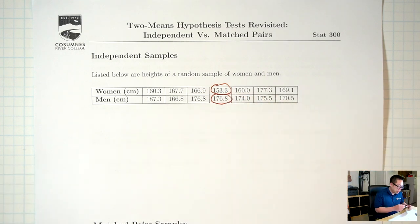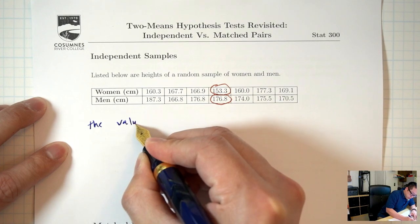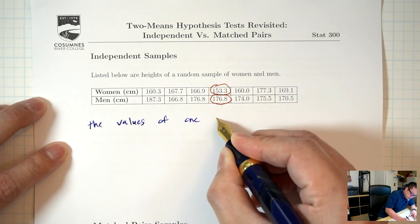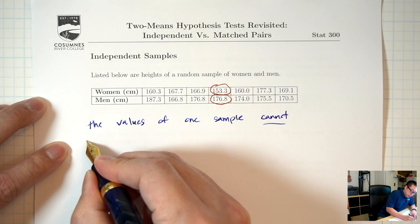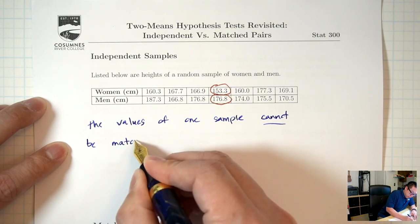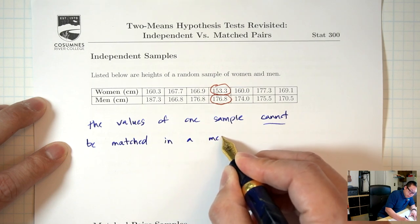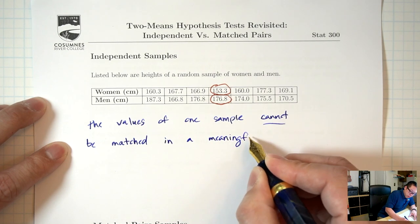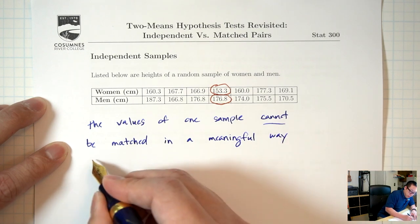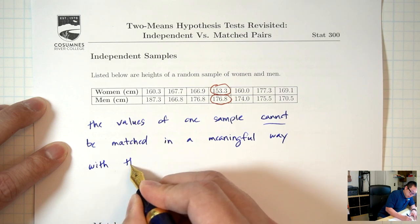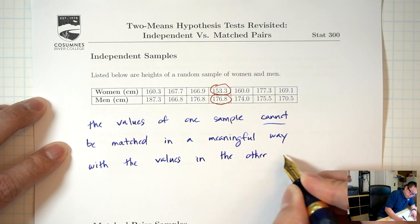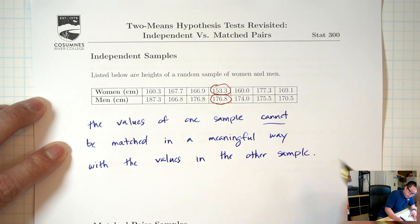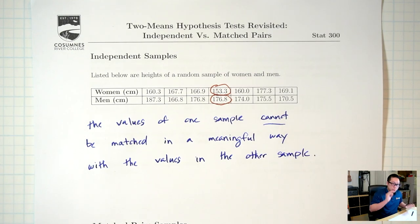That's an independent situation. In an independent situation, the values of one sample cannot be matched in a meaningful way with the values in the other sample.